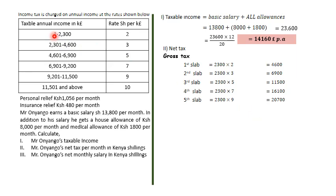The tax rate is in shillings per Kenya pound, so for every Kenya pound in the first slab, two shillings are charged. We multiply 2,300 by 2. In the second slab, 2,300 pounds are charged at three shillings per pound, so we multiply by three. That's why we multiply the slab width by the rate rather than applying a percentage.